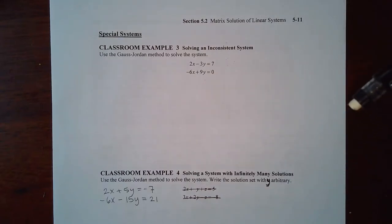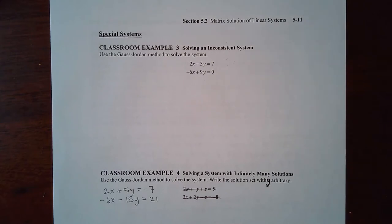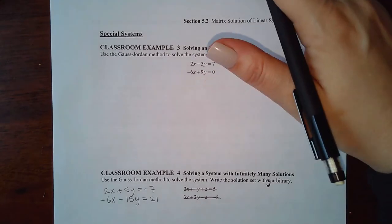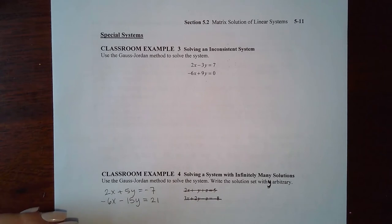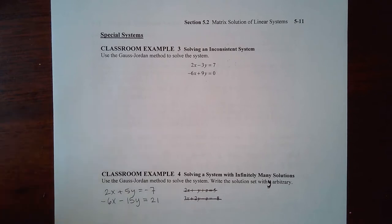The previous examples have all had nice solutions like two and five, one and three, one half and six, or seven halves. There are cases where you don't get an answer at all, or you get what's called infinitely many solutions. We need to cover examples of what happens in those cases and what to write when it says 'solve the system' and you get this unusual behavior.